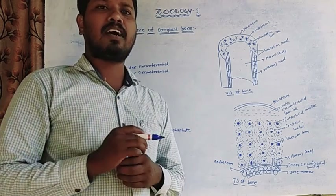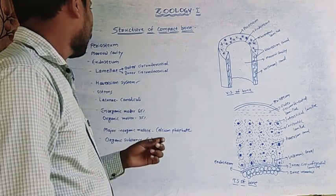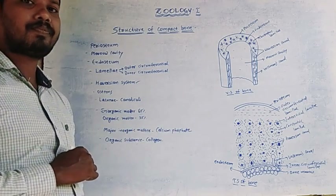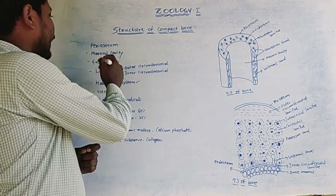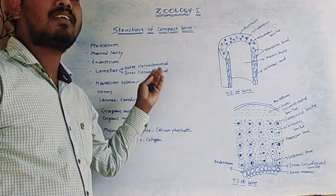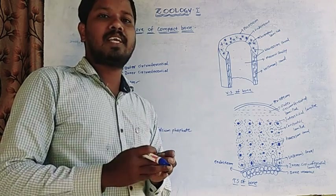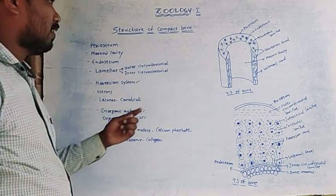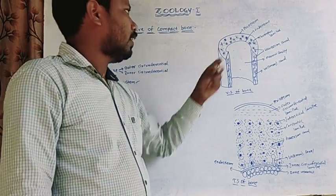The diaphysis is a part of a long bone lying between the epiphysis. The bone is surrounded by a sheath called the periosteum. The inner portion of the bone surrounded by a sheath is called the endosteum. Between the periosteum and endosteum, a cavity is present called the marrow cavity. The bone marrow provides the formation of blood.